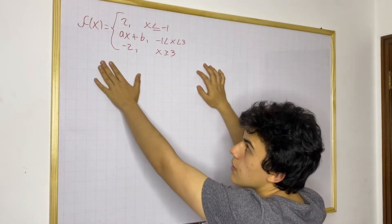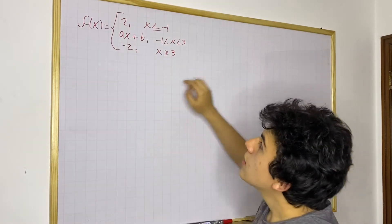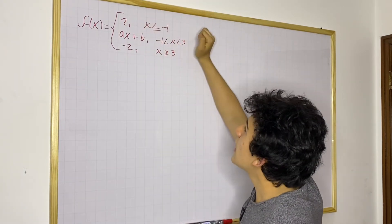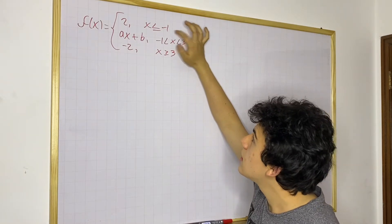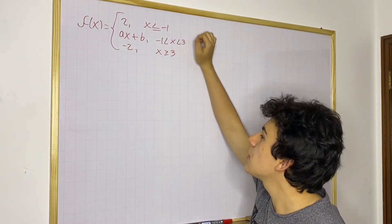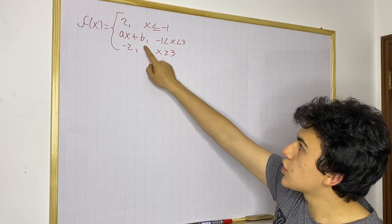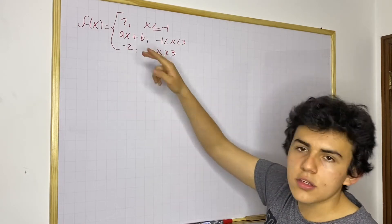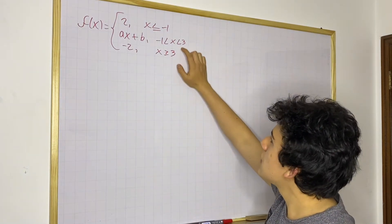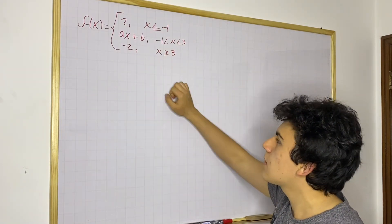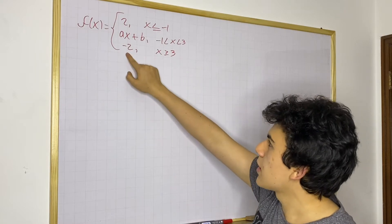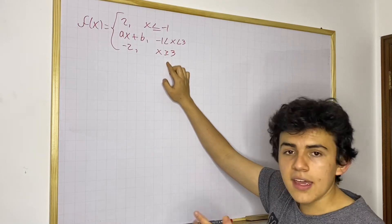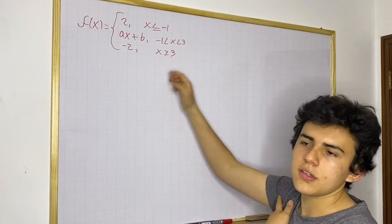The function that we're going to be playing with is the following. We've got three pieces: the first piece says y equals 2 when x is smaller or equal to minus 1. The second piece says we're going to have a linear function with slope a and y-intercept b — those are the two constants we need to find — when x lies between minus 1 and positive 3. And for our third piece, y equals minus 2 when x is greater or equal to 3.